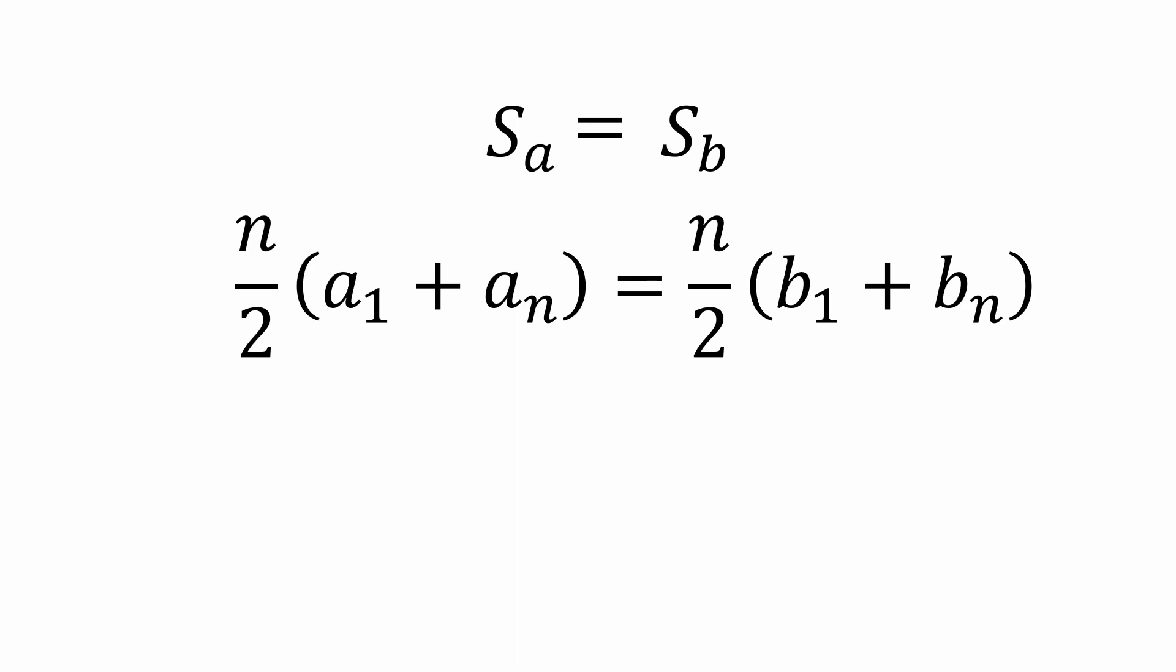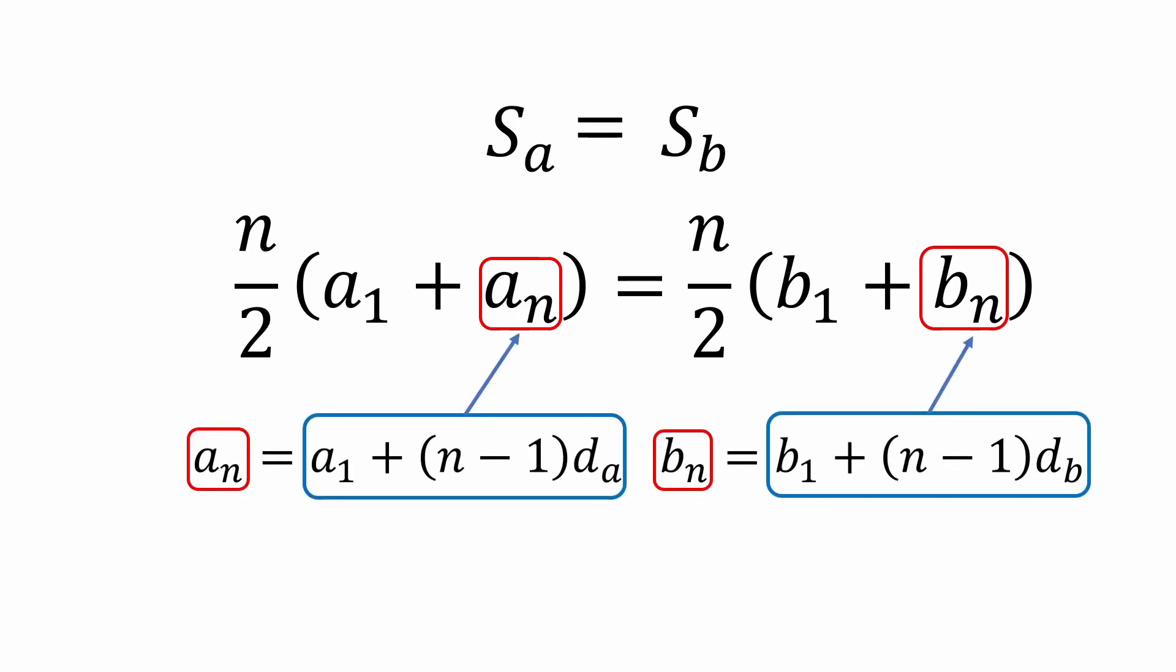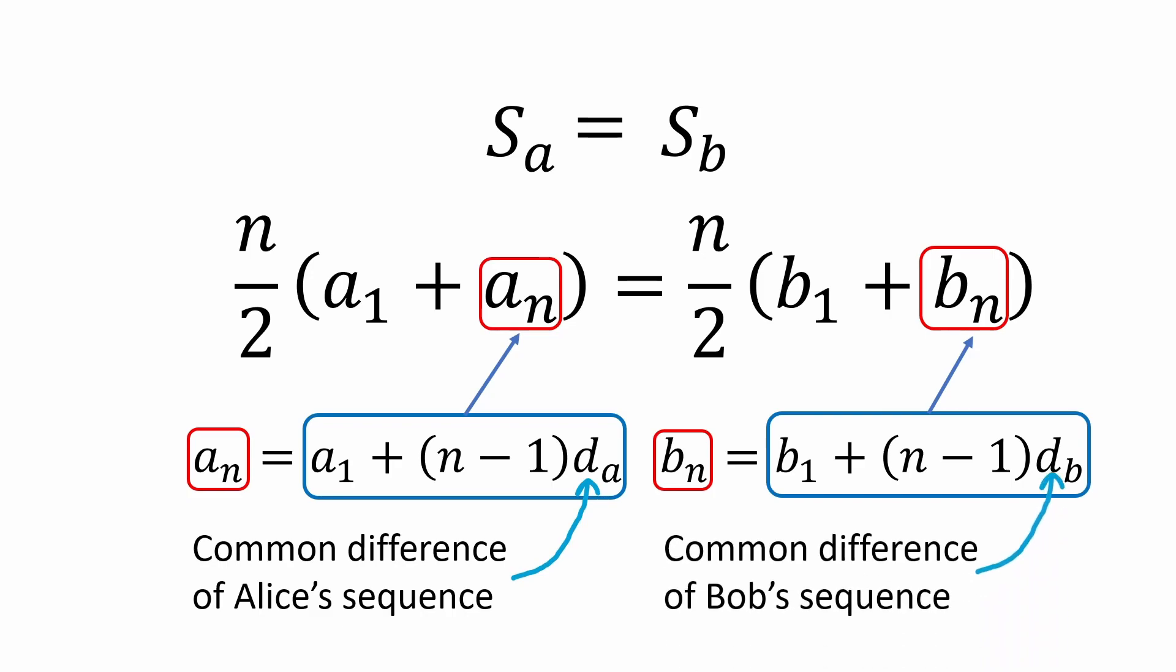Next, we'll replace An and Bn using the arithmetic sequence formula. Recall that the arithmetic sequence formula gets you any term in a sequence by taking the first term and adding to it the number of terms minus 1 times the common difference between any two consecutive terms, which in this case I've labeled as dA for the common difference of Alice's sequence and dB for the common difference of Bob's sequence.